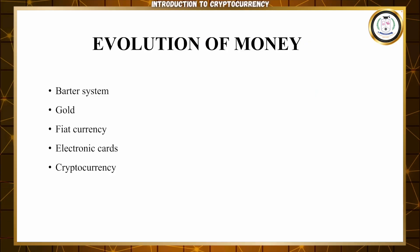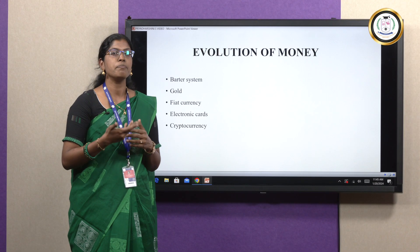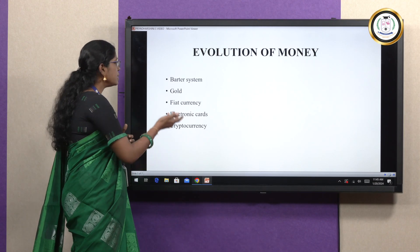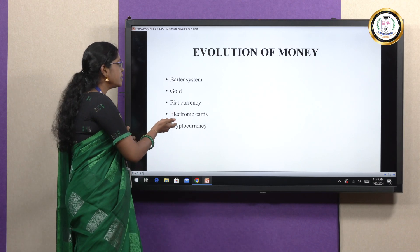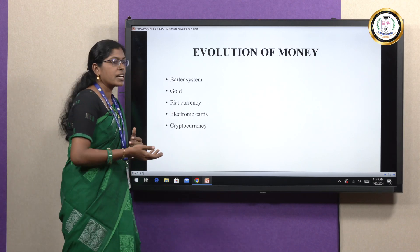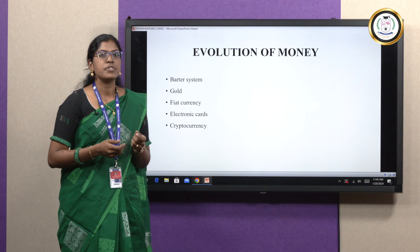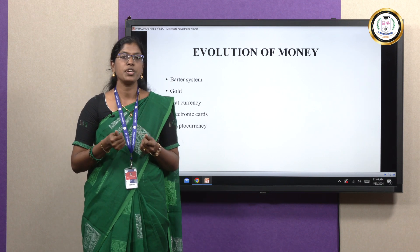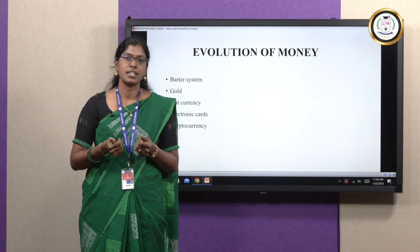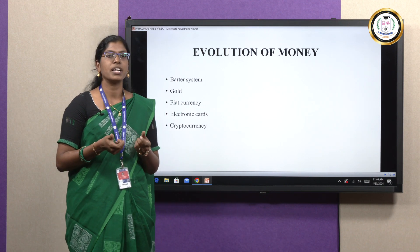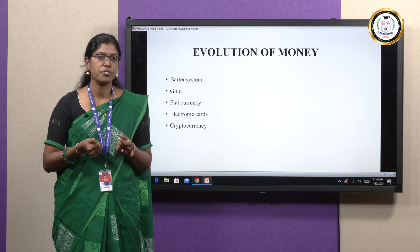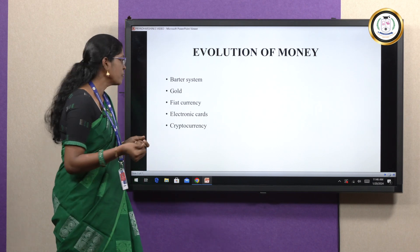In ancient civilization, we had gold as a medium of exchange. Then, in 1900, came fiat currency. After the government was established, we use fiat currency, which is nothing but the real, physical money that we use now.